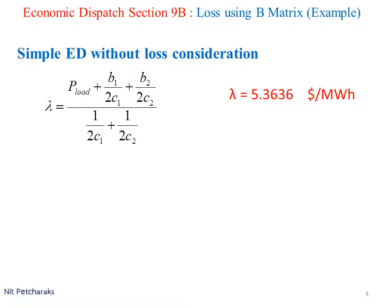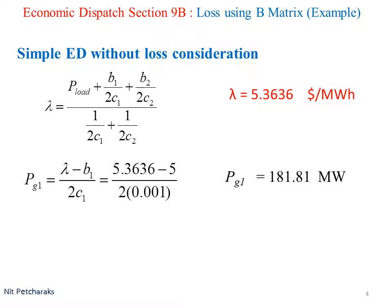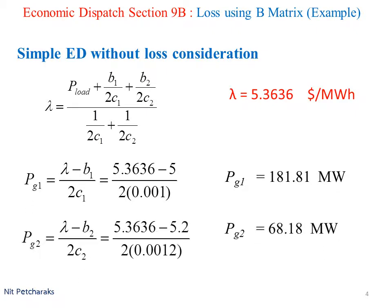We've got the value of incremental cost, approximately $5.4 per megawatt hour. Then we calculate PG1 and PG2. PG1 is approximately 182 megawatt, whereas PG2 is 68 megawatt. P-load is 250 megawatt.